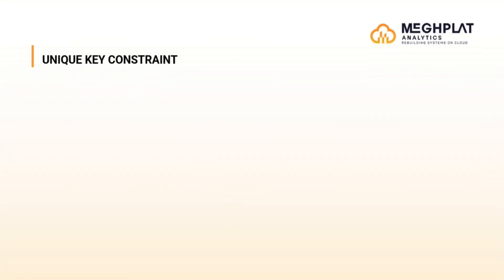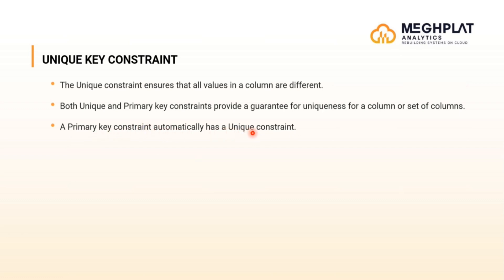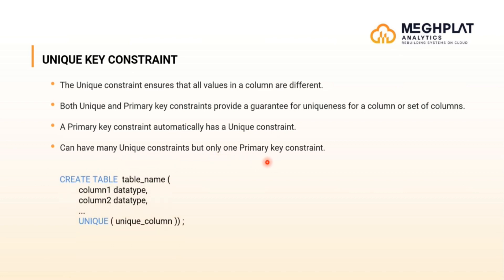The next one is the unique key constraint. The unique constraint ensures that all values in a column are different. Both unique and primary key constraints provide a guarantee of uniqueness for a column or set of columns. A primary key constraint automatically has a unique constraint. A table can have many unique constraints but only one primary key constraint. The syntax: create table, table name, then the column and its data type followed by the unique keyword with the unique column inside.